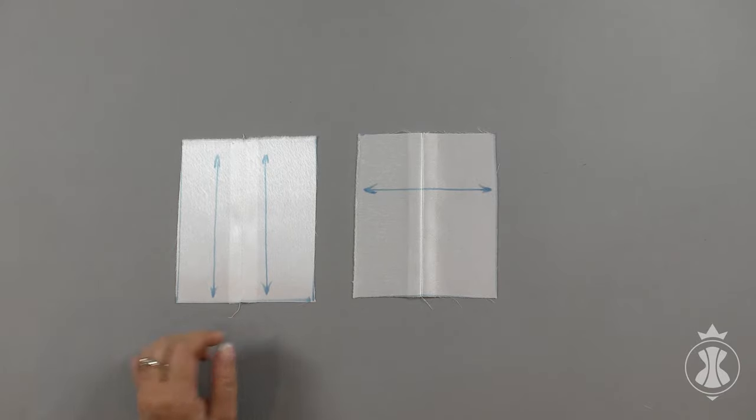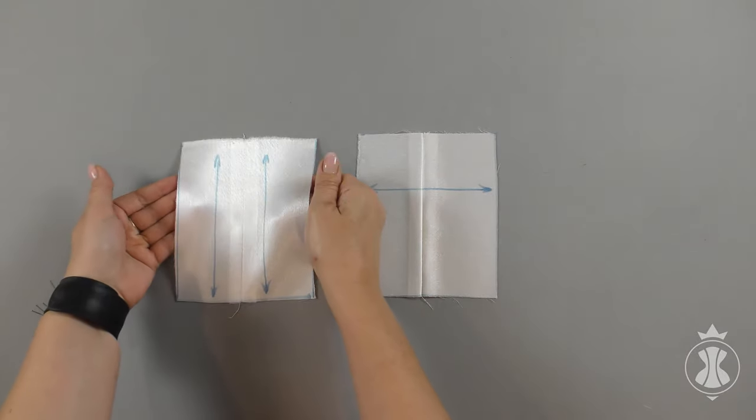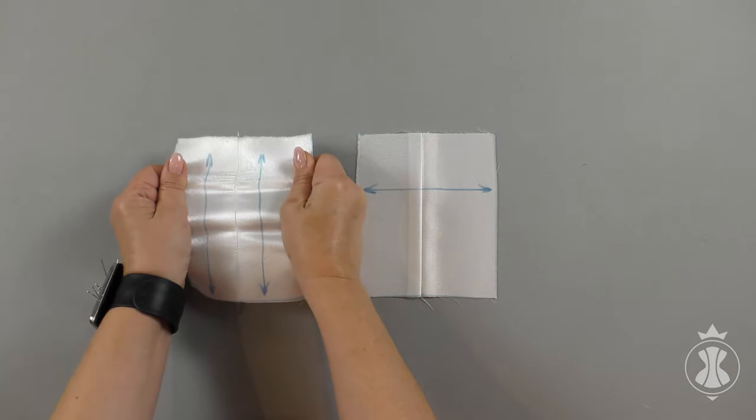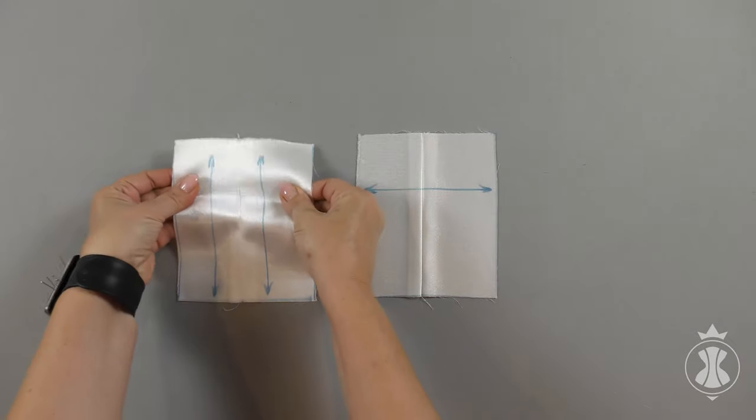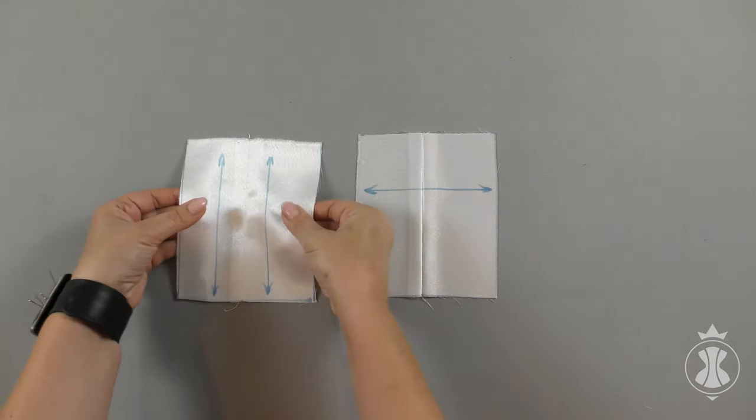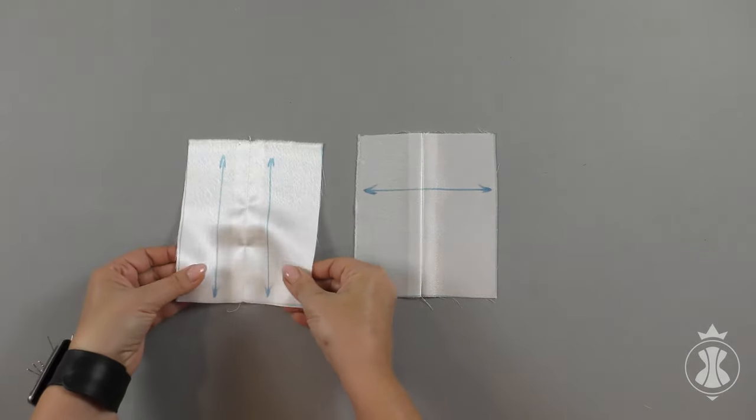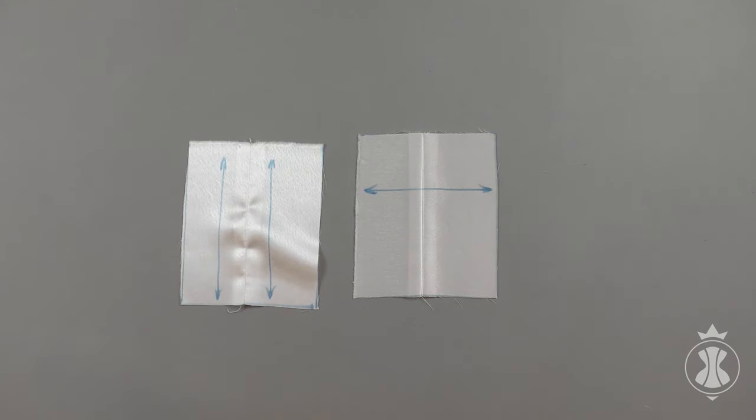Let's check the seams for stability. Sample 1: I stretch the sample and see that the seam is not stable as fabric deforms and wrinkles. It means we will have to press seams a lot during our work to get the initial look.